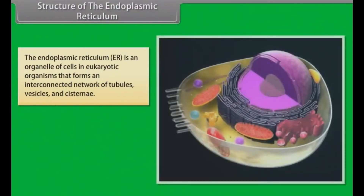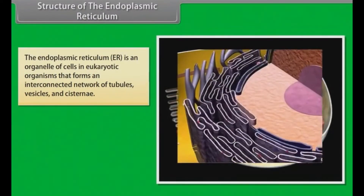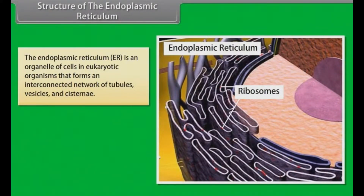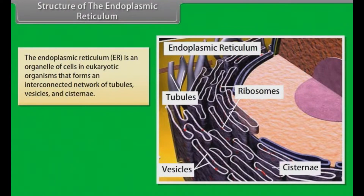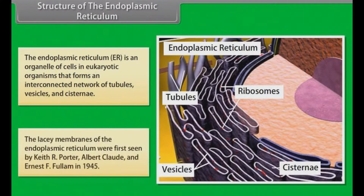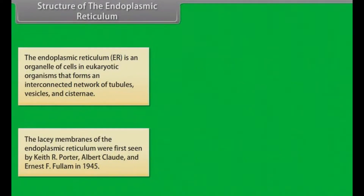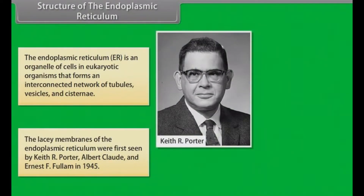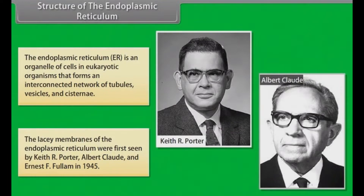Structure of the endoplasmic reticulum. The endoplasmic reticulum (ER) is an organelle of cells in eukaryotic organisms that forms an interconnected network of tubules, vesicles and cisternae. The lacy membranes of the endoplasmic reticulum were first seen by Keith R. Porter, Albert Claude and Ernest F. Fullam in 1945.